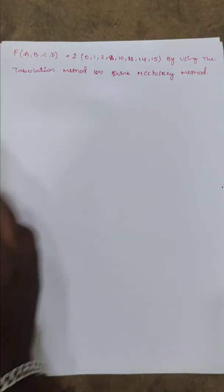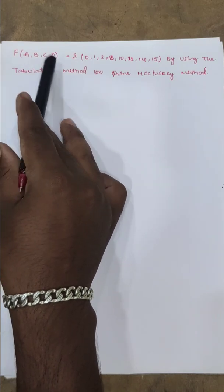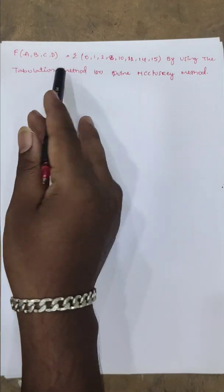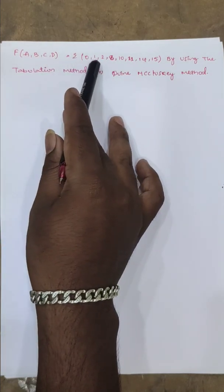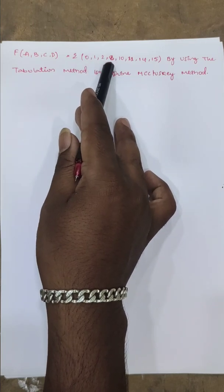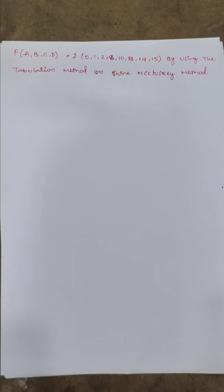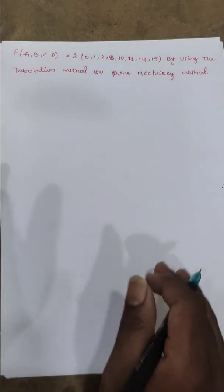Let's go into the question. We have a function F equal to F(A,B,C,D), given as a sigma of minterms: 1, 2, 8, 10, 11, 14, 15. We will use the Tabular Method to reduce this equation.